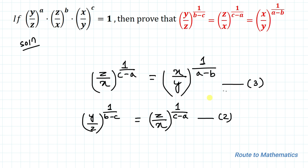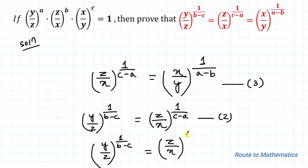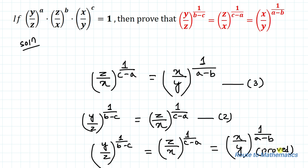By combining equations 2 and 3, we can write: (y/z) to the power 1/(b minus c) equals (z/x) to the power 1/(c minus a) equals (x/y) to the power 1/(a minus b). Hence our equation is proved. I hope you have understood the solution. Thanks for watching — please subscribe to my channel and hit the like button for more such interesting videos. Thank you.